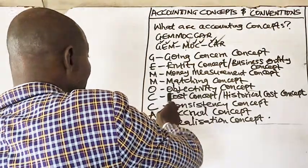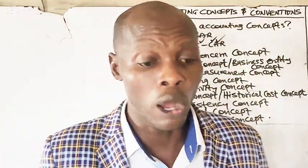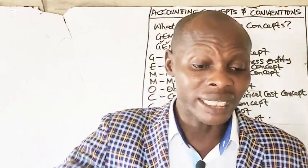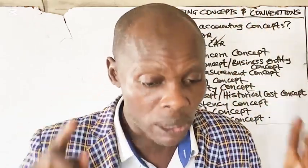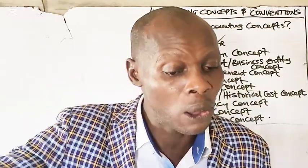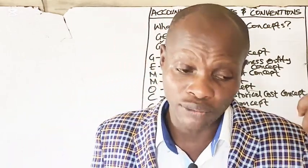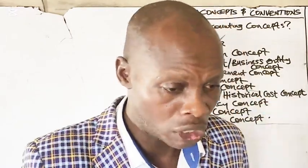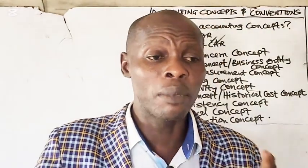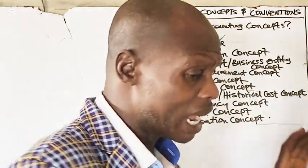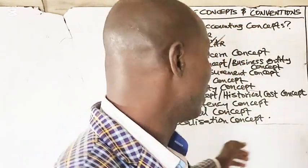Number six: cost concept, also called the historical cost concept. This states that assets are recorded at their original cost price, not the market value. For example, if land is bought for $5 million, it stays recorded at $5 million unless it is revalued.